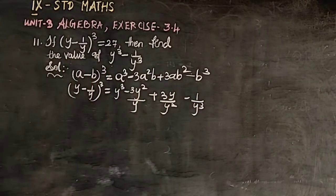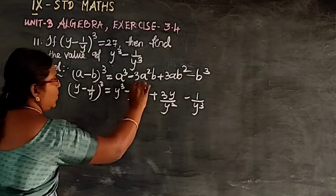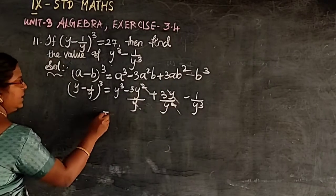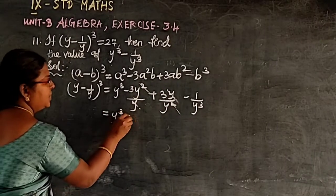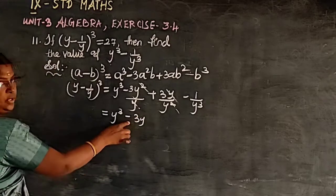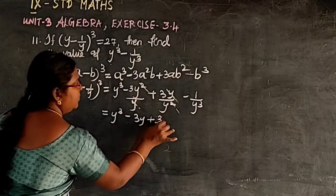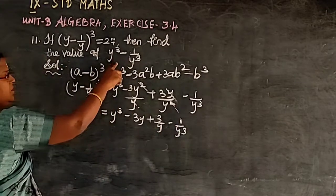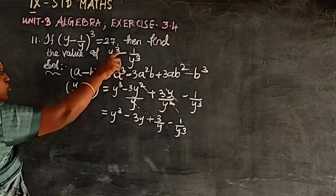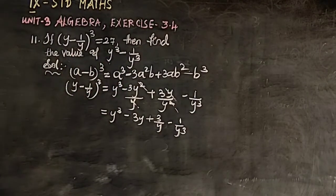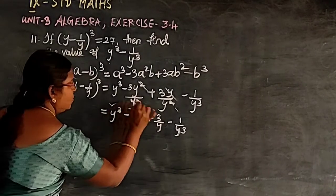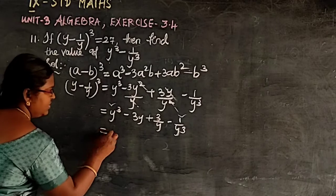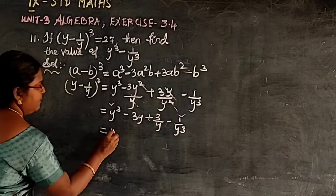Simplifying: the y terms cancel where applicable, giving us y³ - 3y + 3/y - 1/y³. We need to find y³ - 1/y³, so we keep those two terms on one side, and from the remaining terms we factor out -3.